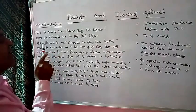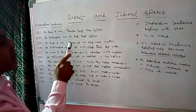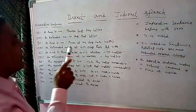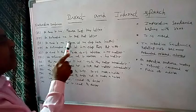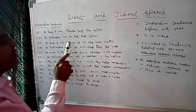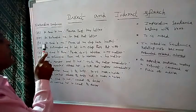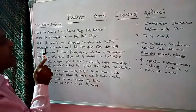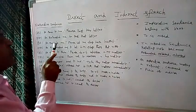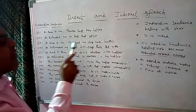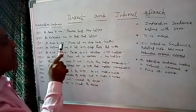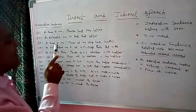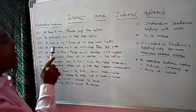The next direct speech example is: He said to us, "Please let me stay here tonight." The imperative sentence begins with a verb — 'please' is a verb. In direct speech, the subject is 'He'. The same subject must be written in indirect speech. The reporting verb 'said to' becomes 'requested', because the meaning of the sentence is a request.